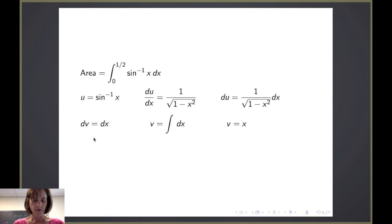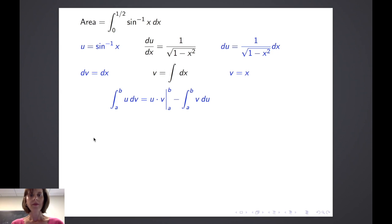Now as you recall, integration by parts has the formula that if we integrate u dv, we get u times v minus the integral of v du. So we want to know what happens when we evaluate a definite integral using integration by parts. Well, nicely enough, it's simply evaluating each part with the bounds of a to b. So evaluate the definite integral from a to b of u dv as u times v evaluated from a to b minus the integral from a to b of v du.